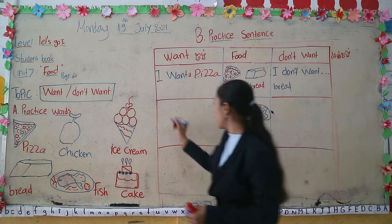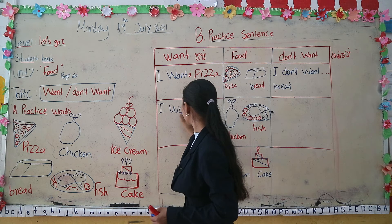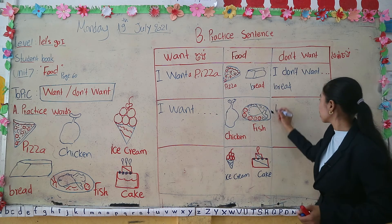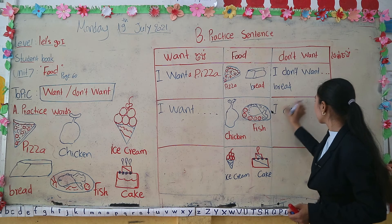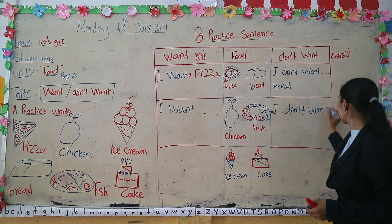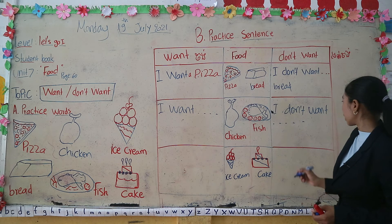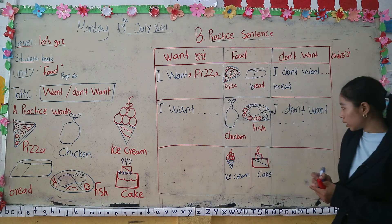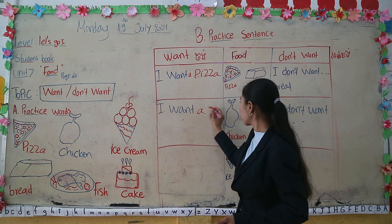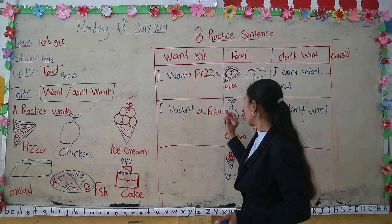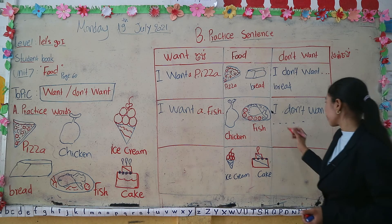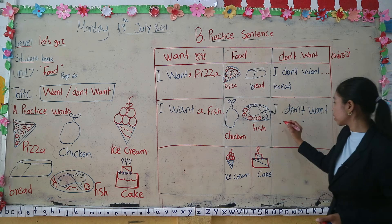I want a pizza. So move to here — one, two. I want... what do you want? I don't want... what? You want fish? Write it down — you want fish? A fish. I don't want chicken. You don't want chicken, right? You want fish. So you write: I don't want chicken.